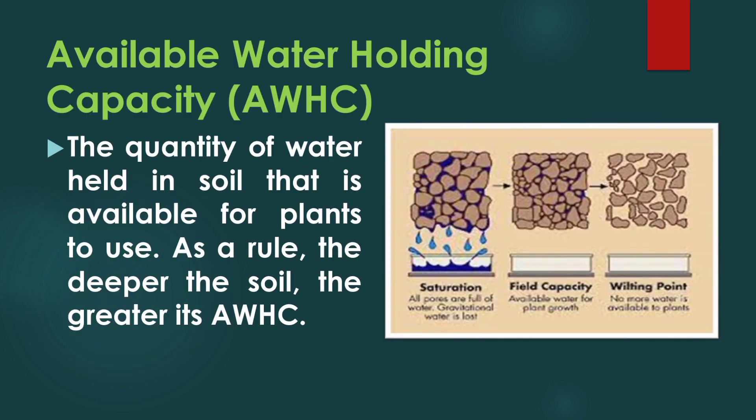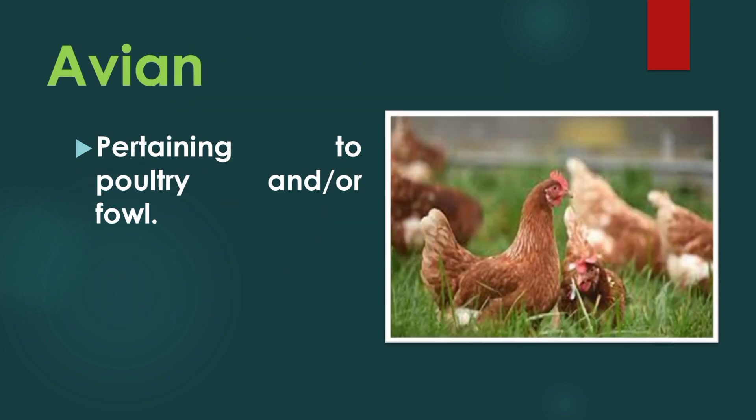Available water holding capacity (AWHC): the quantity of water held in soil that is available for plants to use. As a rule, the deeper the soil, the greater its AWHC. Avian: pertaining to poultry and/or fowl.